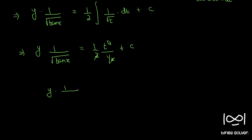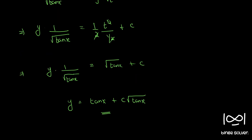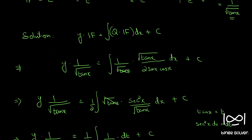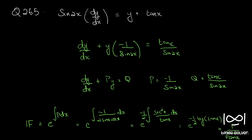Substituting back for tanx, we have y · 1/√(tanx) = √(tanx) + c. Multiplying throughout by √(tanx) we have y = tanx + c·√(tanx). This is our final solution. This is an interesting question with some good integrals involved, so I will mark this question as important. This is the solution to question number 265.